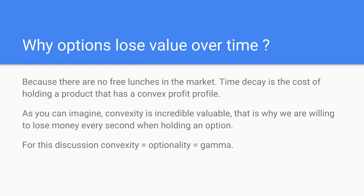There are many ways to approach Gamma, but my favorite is: why do options lose value over time? That's an interesting question. All of you trade options and it is a given that options decay with time — every second you hold an option it is losing value, and no one challenges that. But the question is why? The angle I want to explore is the angle of gamma.